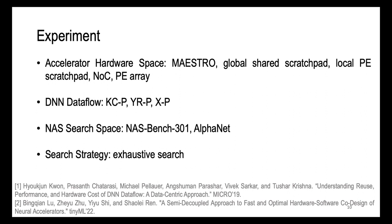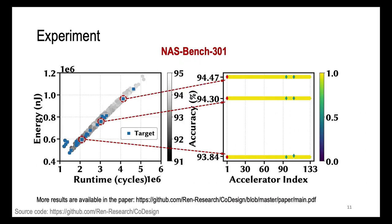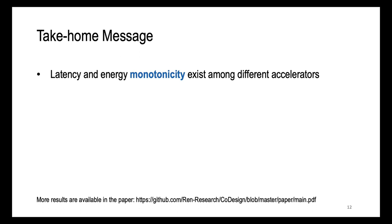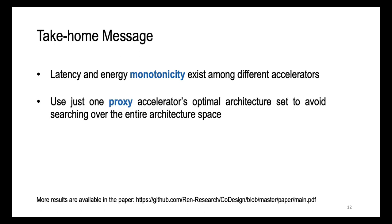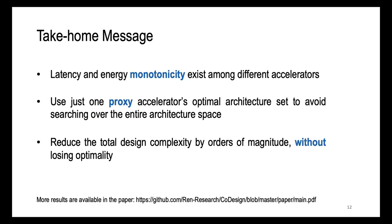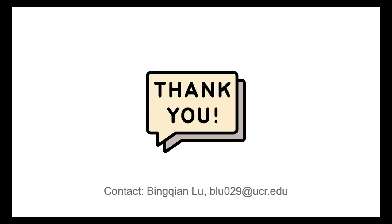Our experiment is conducted on a simulator called Mistral; detailed settings can be found in our paper. As an example result, by using any of the accelerators as a proxy, our approach can still find the optimal architecture with the same accuracy as that found by a state-of-the-art hardware-software co-design. In conclusion, we demonstrate latency and energy monotonicity among different accelerators and use just one proxy accelerator's optimal architecture set to avoid searching over the entire architecture space. Compared to state-of-the-art co-designs, our approach reduces total design complexity by orders of magnitude without losing optimality.